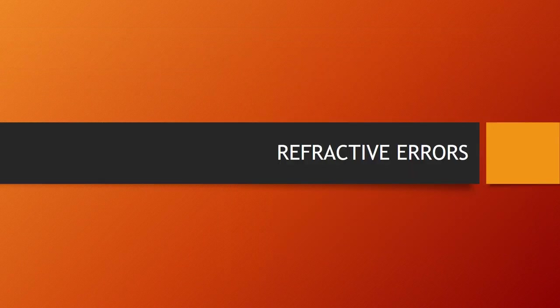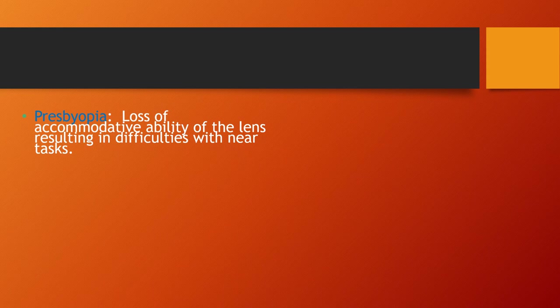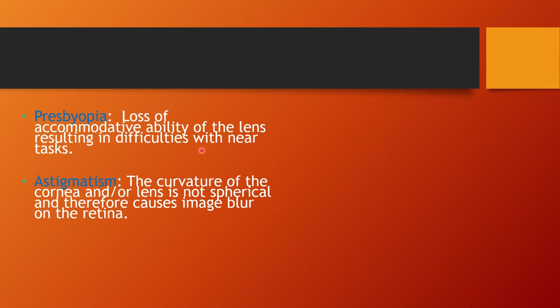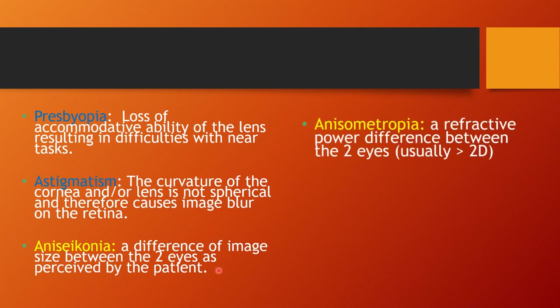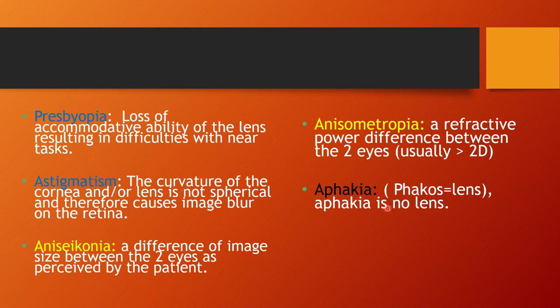Moving to refractive errors: presbyopia is related to old age, starting around 40 years with loss of accommodative ability of the lens resulting in difficulty with near tasks. Astigmatism means the curvature of the cornea or lens is not spherical, causing image blur on the retina. Anisokonia is a difference in image size between the two eyes as perceived by the patient. Anisometropia is a refractive power difference between the two eyes, usually greater than two diopters. Aphakia means absence of lens; pseudophakia means an artificial lens is present in the eye.